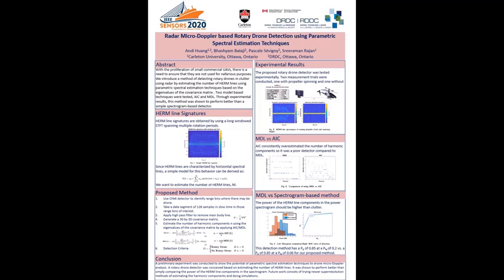The steps of the proposed method are as follows. First, a segment of 128 data points are taken in a range bin where there may be a drone. A high-pass filter was applied to remove the main doppler component because we are only focused on the Hermlines.